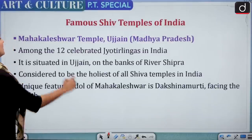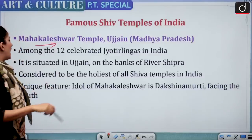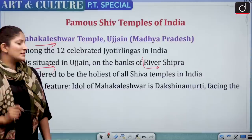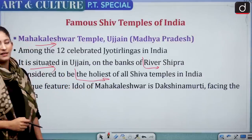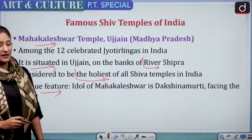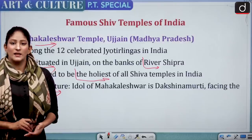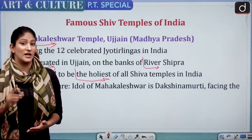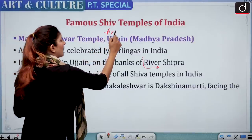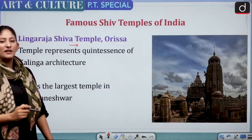Mahakaleshwara Temple of Ujjain is also one of the 12 Jyotirlingas, situated on the banks of the River Shipra in Ujjain. It is considered the holiest of Shiva temples in India. The unique feature is that the idol of Mahakaleshwara is Dakshinamurti — facing the south. The Mahakaleshwara Temple has been mentioned in the Puranas, during which period Ujjain was known as Avanti.